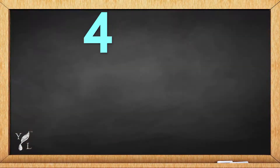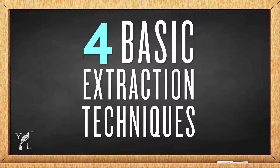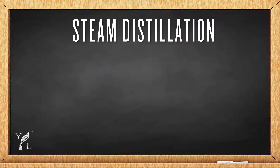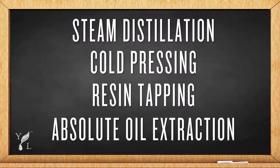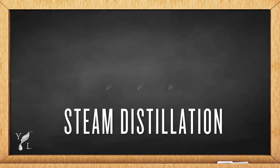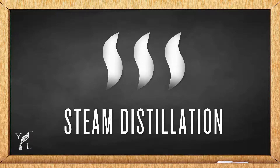In this video you will learn how essential oils are extracted. You may wonder how essential oils are extracted from plants. Four basic extraction techniques exist: distilling, cold pressing, resin tapping, and absolute oil extraction. I'd like to cover each of these in detail. Let's start with the most common of all the essential oil extraction methods.